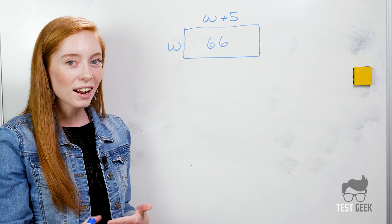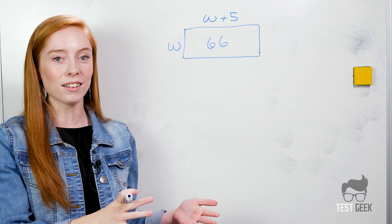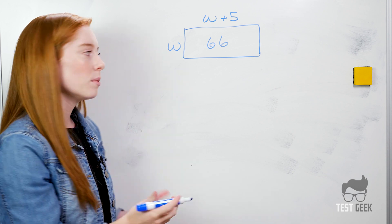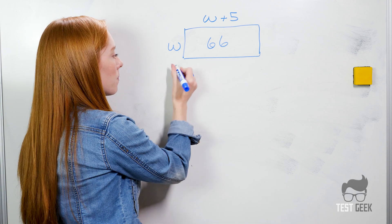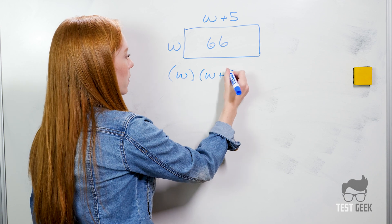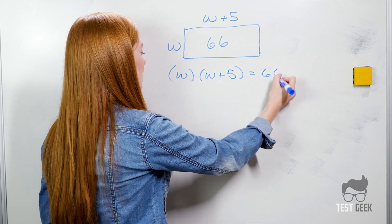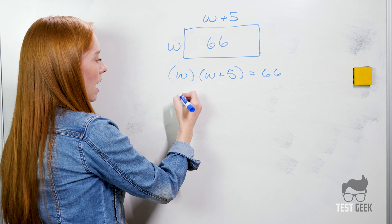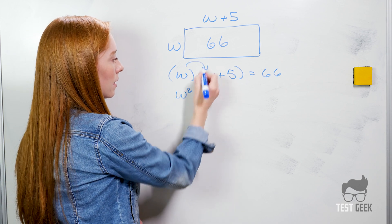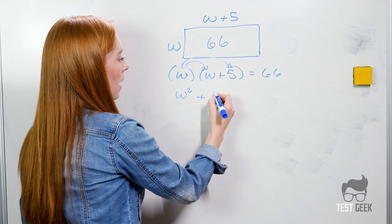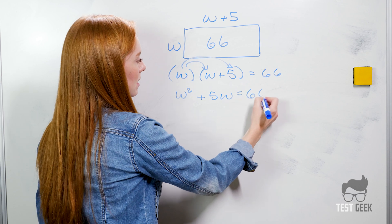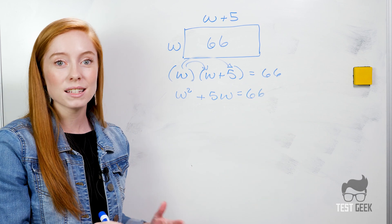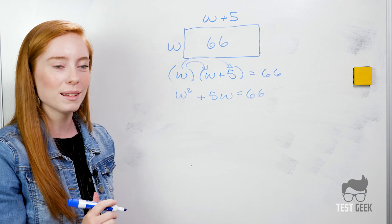And we know that our area formula of a rectangle is length times width so we can write that out and say W times W plus 5 equals 66 and we can work this out and say W squared plus 5W equals 66. We're really close but let's still put it in our normal trinomial format so that we can factor.